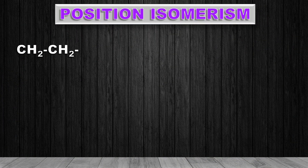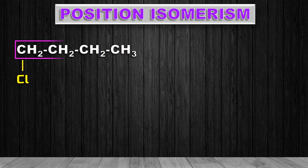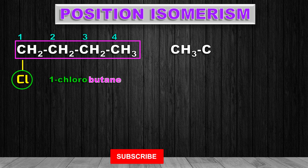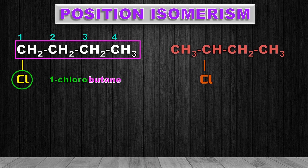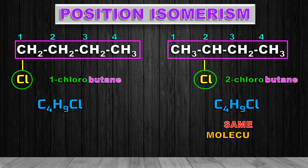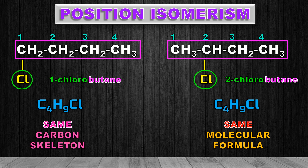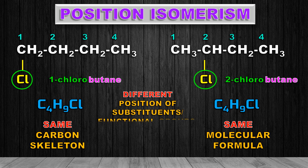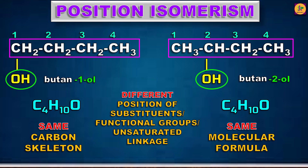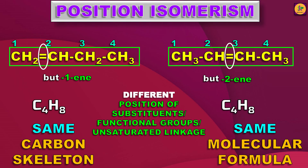Let us take the following examples. A butane chain with a chloro substituent at the first position — that is 1-chlorobutane. The second example is the same butane with the chloro substituent at the second position — 2-chlorobutane. They share the same molecular formula and even the carbon skeleton, that is butane, is the same. The only difference is the position of the substituent chloro — at first position and at second position. So it is position isomerism: same molecular formula but the position of the functional group or unsaturated group changes.